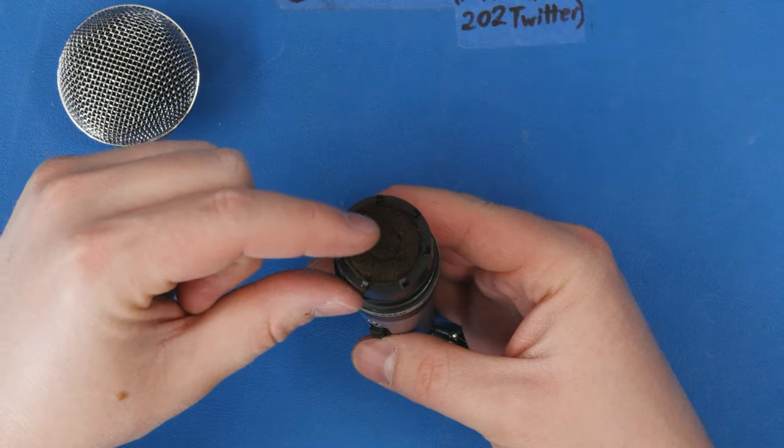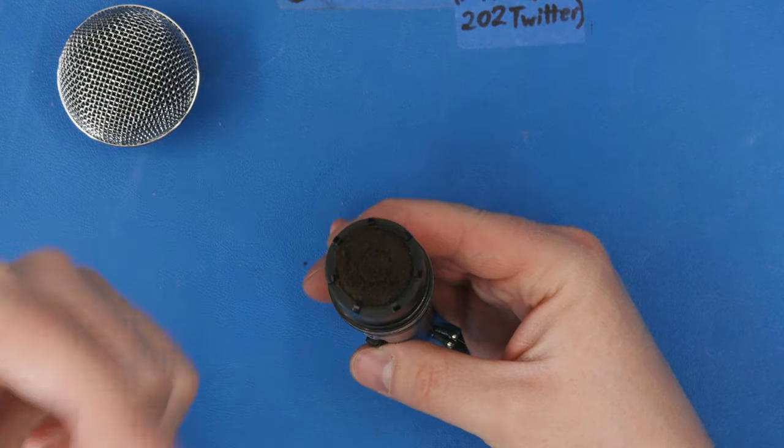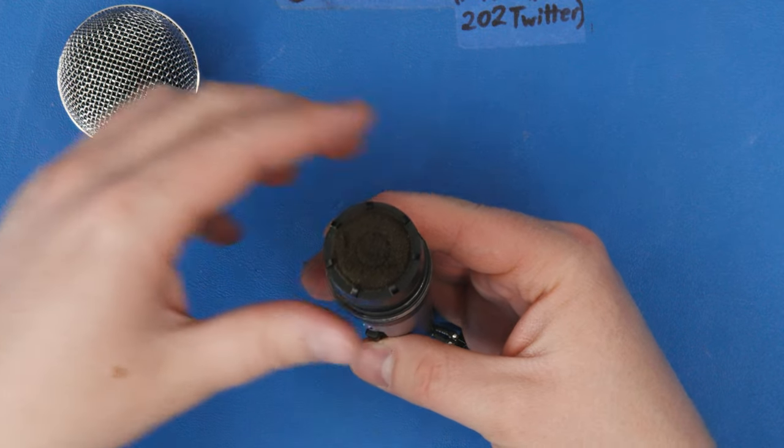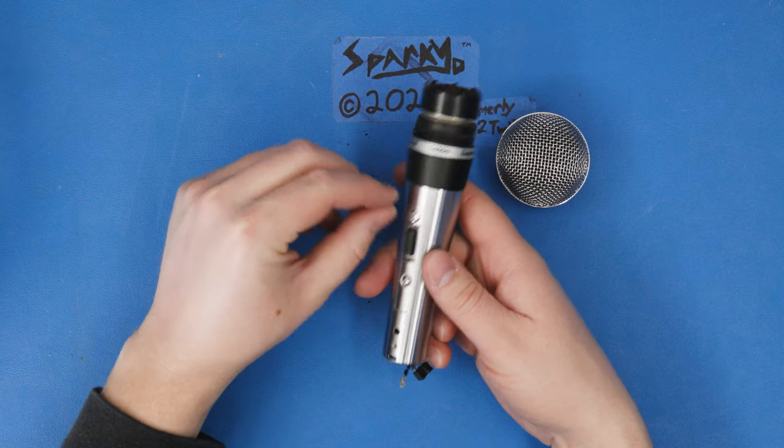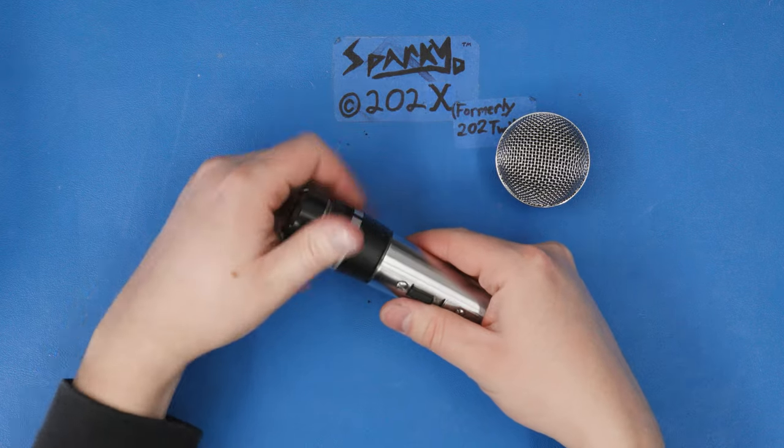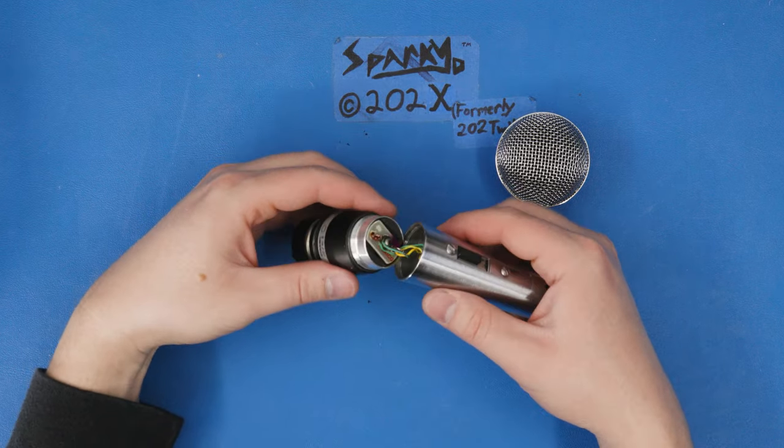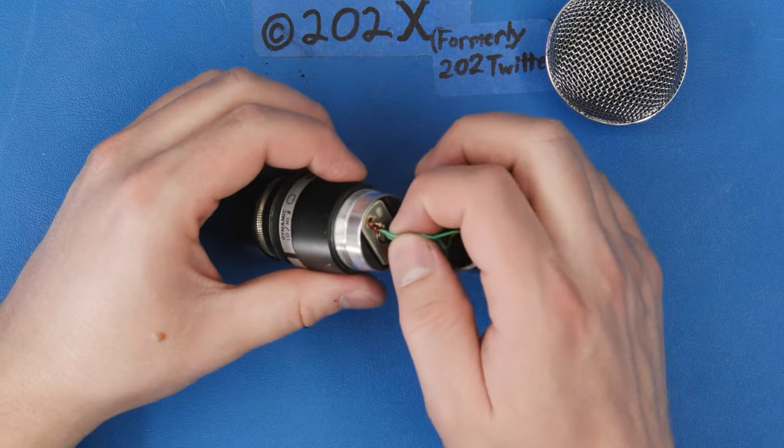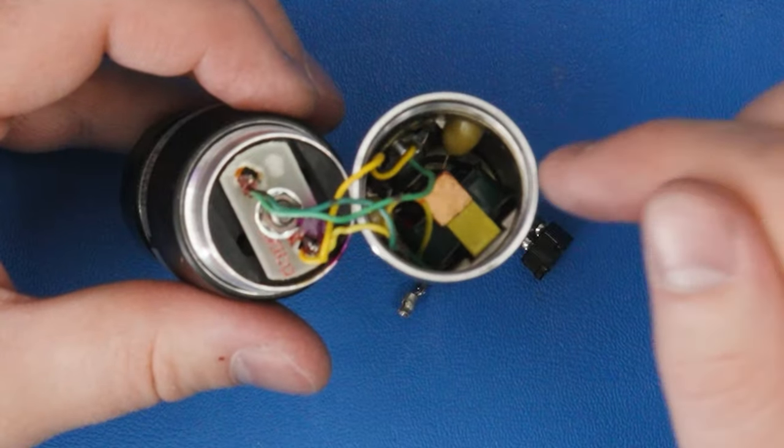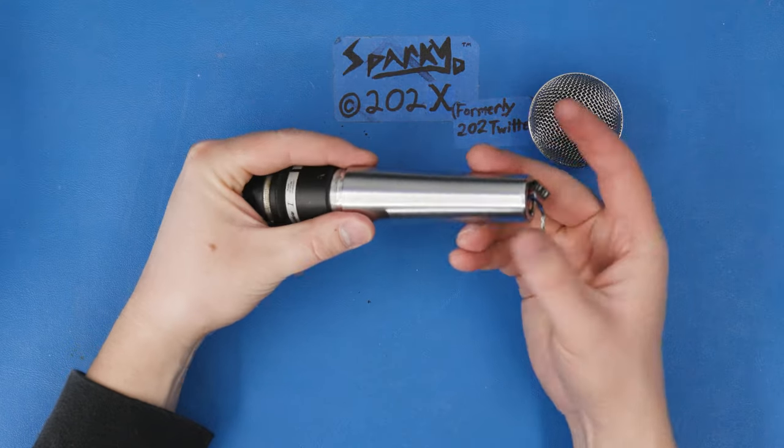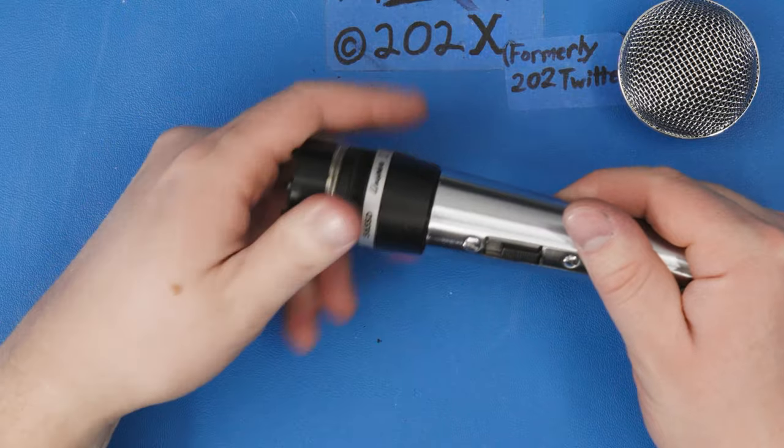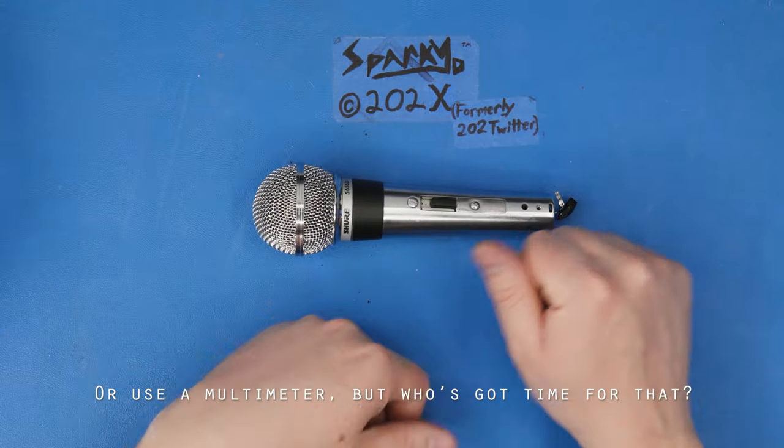On this microphone, the foam has started to degrade on top of the capsule. So hopefully that doesn't affect how it sounds too much. The foam inside of this grille is fine though. Now to get at the back of the capsule, I just unscrew it like that. I'll check the wiring on the back side of the capsule and it looks okay. You can see down inside the transformer and the back of the switch. So I think the only issue is going to be the plug. But the only way to know for sure is to get a plug on here, test it out, and see what happens.